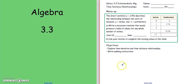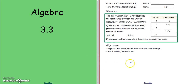This is Algebra Lesson 3.3. Here's your warm-up that will be on Schoology. Our objectives today are to explore time and elevation and time and distance relationships, and describe how a graph looks based on the location of the person.